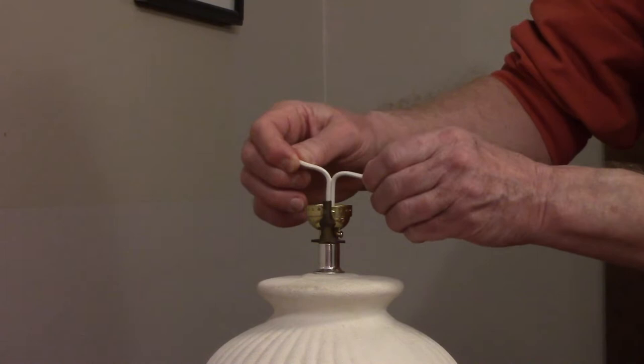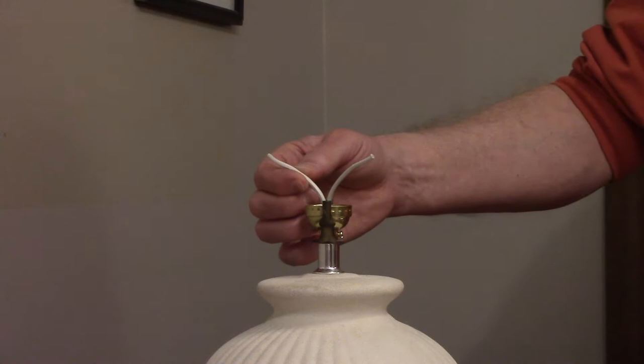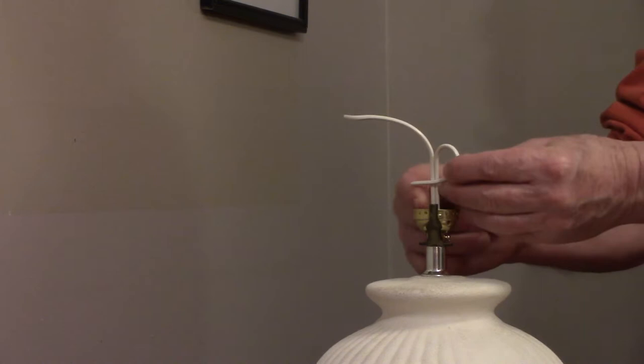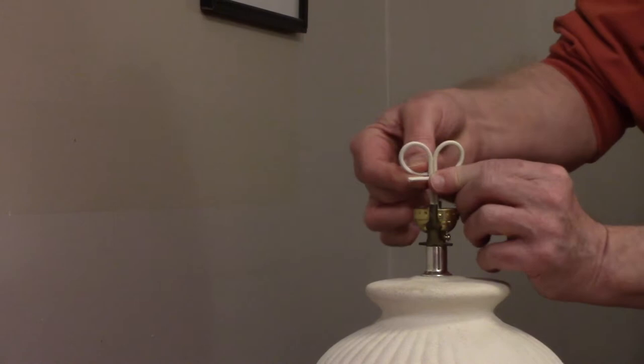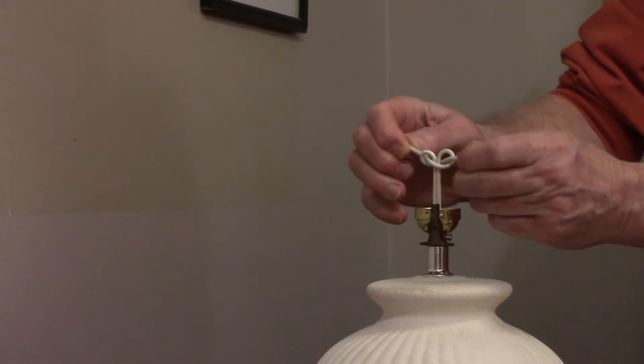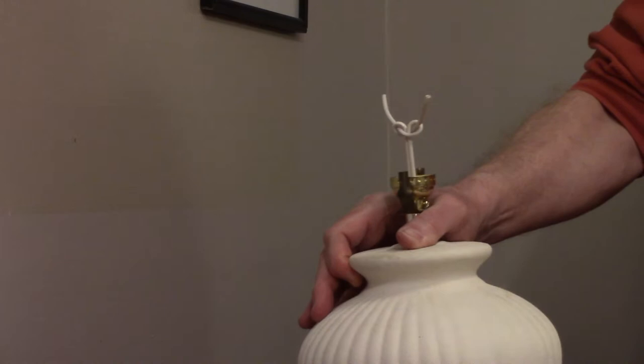We need to create an underwriter's knot. To create an underwriter's knot, you're going to take one wire and loop it down in front of the cord. Take the other wire and loop it down in back of the cord, and then you're going to pull the ends through the loops you've created. Pull it into a loose knot. You can pull down on the cord to get the knot in the bottom of the base.